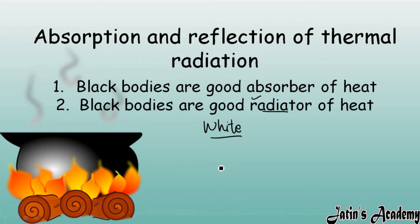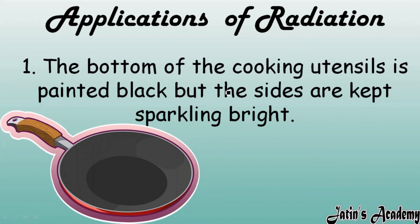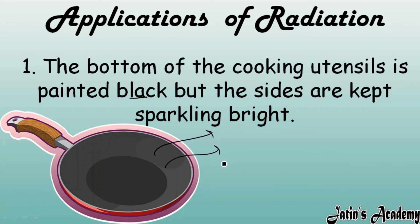The first application of radiation: the bottom of a cooking utensil is painted black. You may have observed in the kitchen that cooking utensil bases are always painted black. This is because black bodies are very good absorbers of heat — when we put the utensil on fire, the black base absorbs more heat, so cooking takes place easily. The sides of the cooking utensils are painted sparkling bright so that the heat inside the pan reflects back into the pan and the food cooks properly.